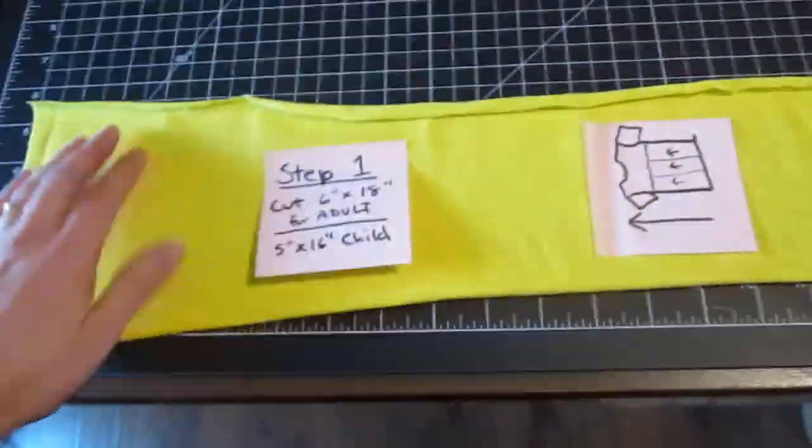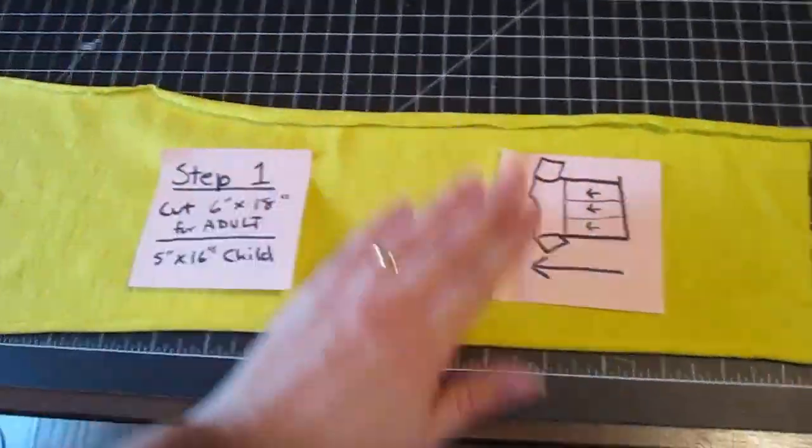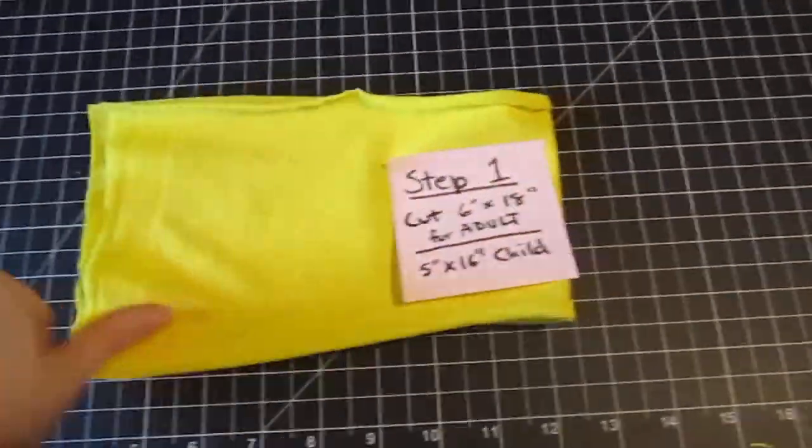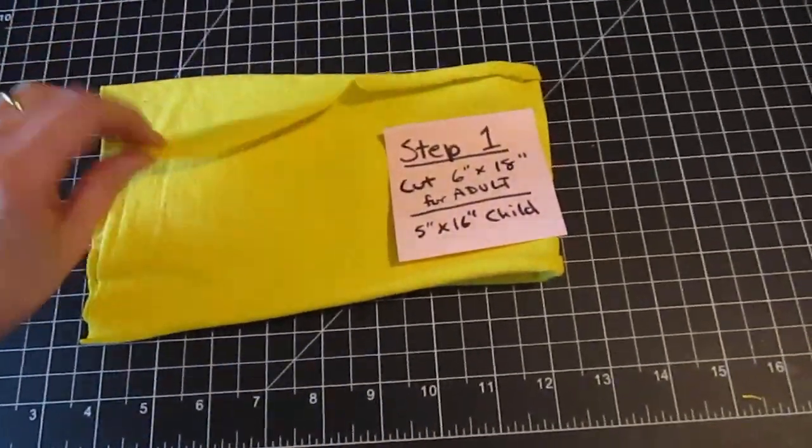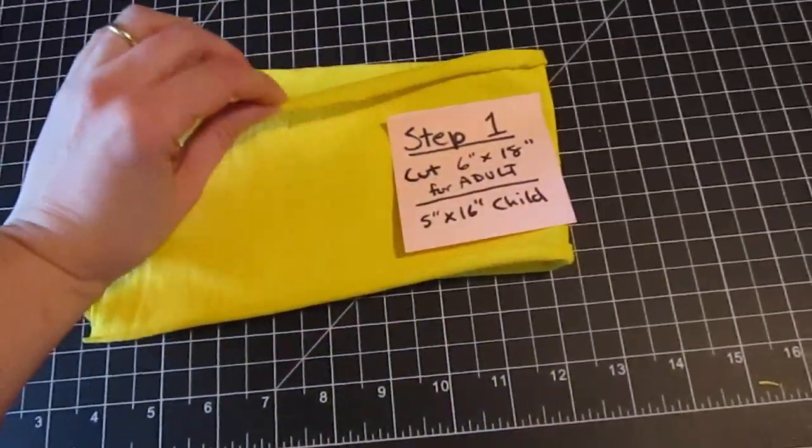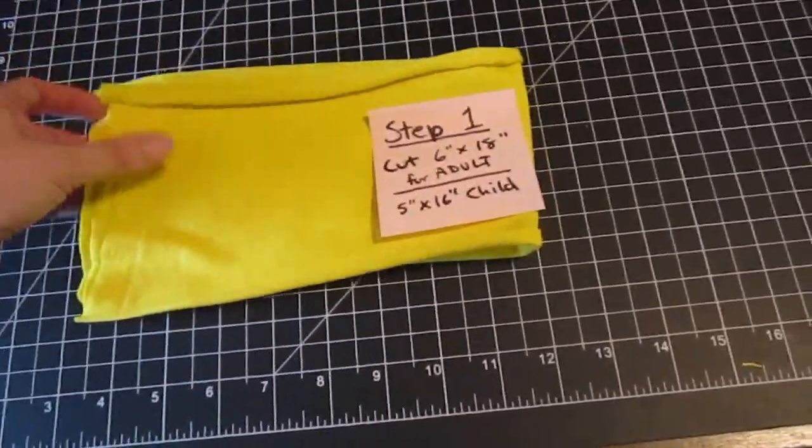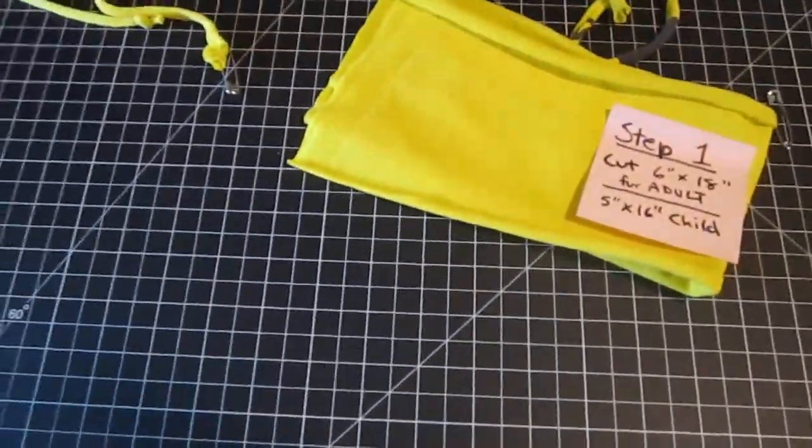So you get your fabric the right dimensions and then you want to fold it in half with the right sides together and the wrong sides out. For t-shirt fabric you can tell that because the wrong side curls towards the wrong side. So this is step two.